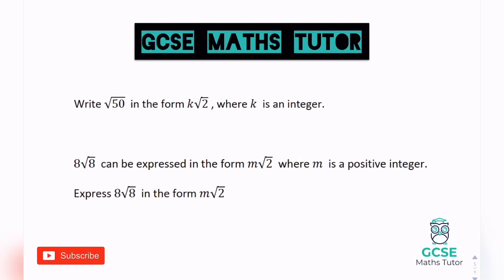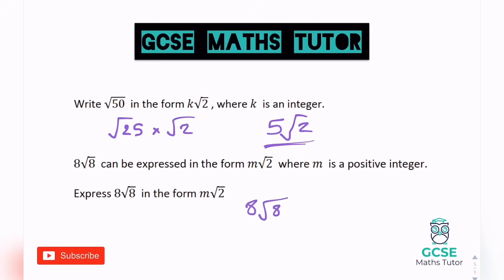Writing the square root of 50 in the form k root 2 where k is an integer: 25 goes into 50, so it's the square root of 25 multiplied by the square root of 2. The square root of 25 is 5, so it is 5 root 2. For the final question, 8 root 8 expressed in the form m root 2 where m is a positive integer: ignoring the 8, the square root of 8 is the square root of 4 multiplied by the square root of 2, which is 2 root 2. Reintroducing the 8, we need 8 lots of 2 root 2, and 8 lots of 2 root 2 becomes 16 root 2.